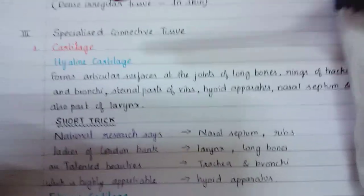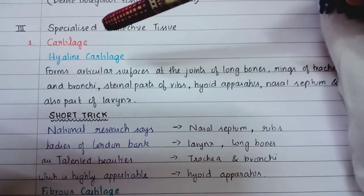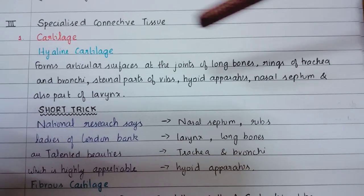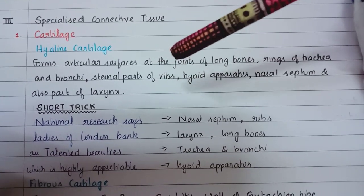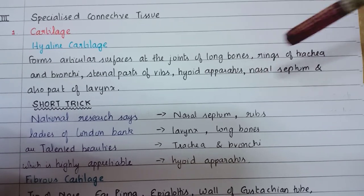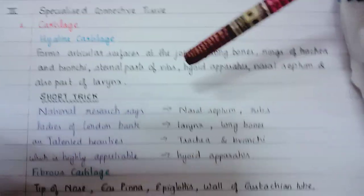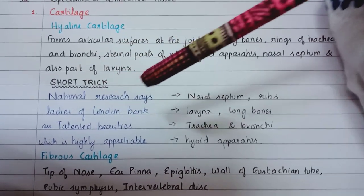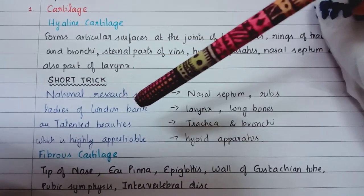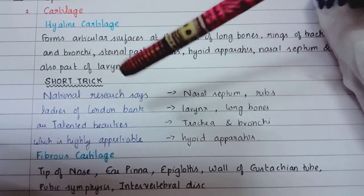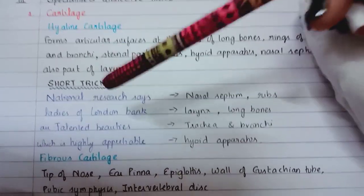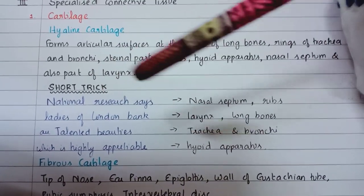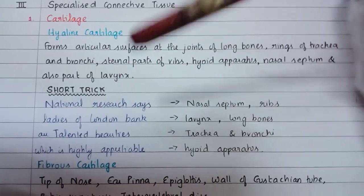Specialized connective tissue - the first one is hyaline cartilage. Hyaline cartilage forms articular surfaces at the joints of long bones, rings of trachea and bronchi, sternal parts of ribs, hyaline apparatus, nasal septum, and parts of larynx. The short trick is: National Research Says Ladies of London Bank Are Talented Beauties, Which Is Highly Appreciable.